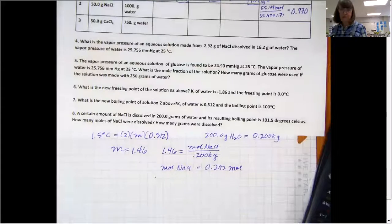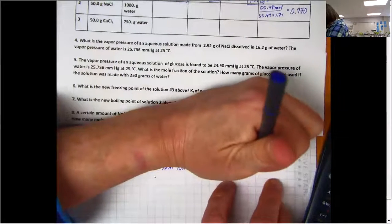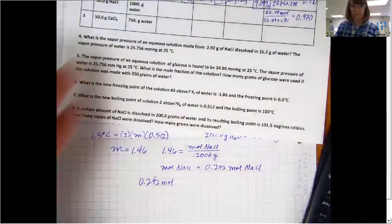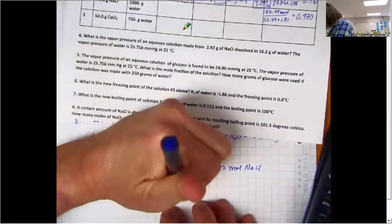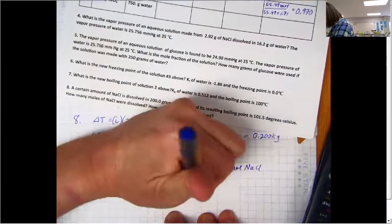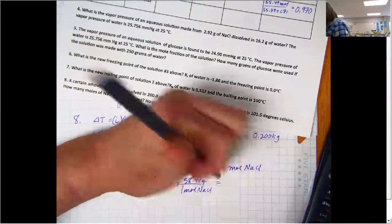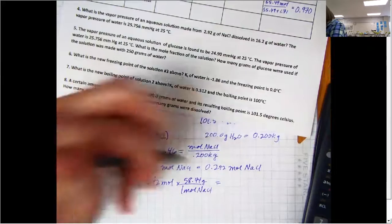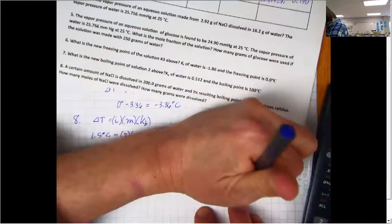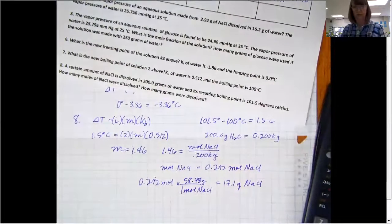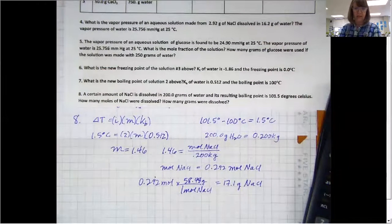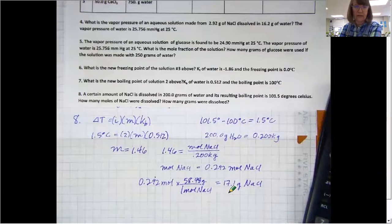And then the last thing I was asked for is how many grams was that? So I can take one last step and convert it back to grams, and find out that 17.1 grams of sodium chloride is how many were dissolved. So that is how you set up question eight. Hopefully, that was helpful. And good luck.